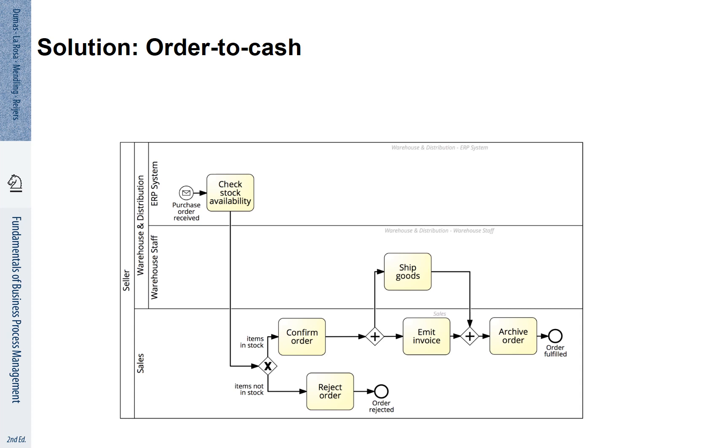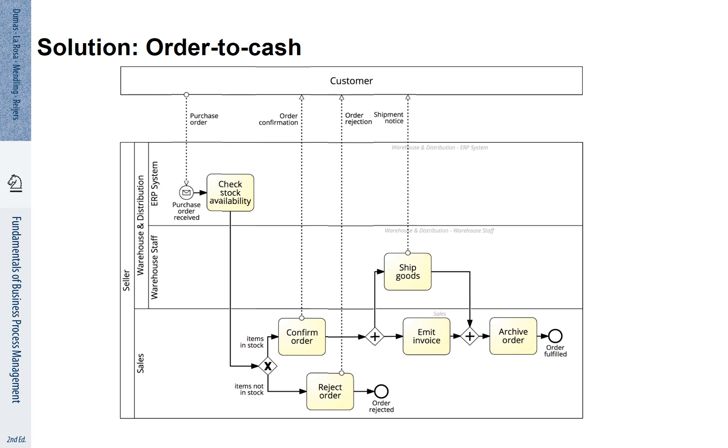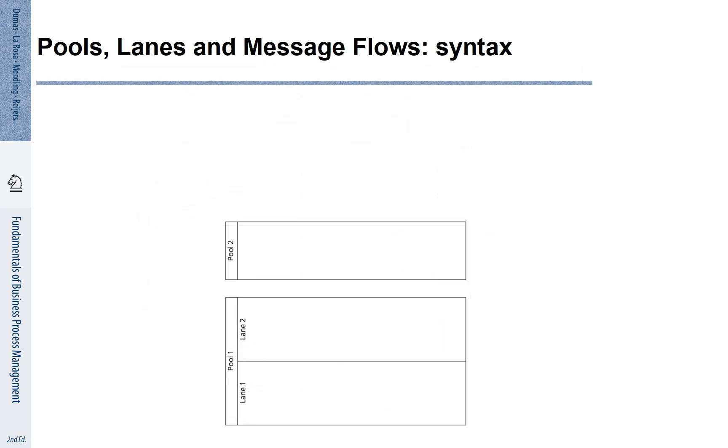This means that we can now extend our order to cash process with an external customer or party. Let's start with the customer. The customer is the one that places an order. This starts the execution of the process on our part. At different stages we come back to the customer. For instance, we send an order confirmation or a rejection. We also ship the goods to the customer and the corresponding shipping notice. The invoice is sent to the customer and then the order completes.